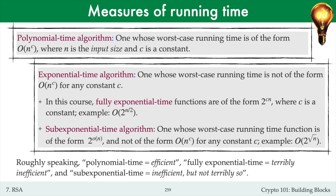Very roughly speaking, a polynomial time algorithm should be considered to be efficient. A fully exponential time algorithm should be considered terribly inefficient, while a sub-exponential time algorithm should be considered inefficient, but not terribly so.